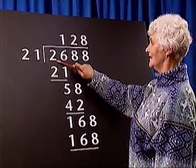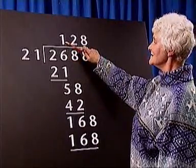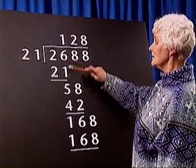21 into 2 won't go. 21 into 26 goes once. So, we place a 1 above the 6 and take 21 away from 26, which is 5.